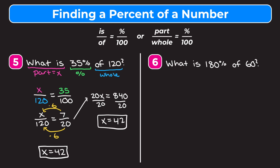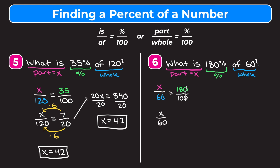The last problem: what is 180% of 60? 'What is' is our part, so X. 180% is our percent, and 'of 60' is our whole. So X over 60 equals 180 over 100. Simplifying by crossing out zeros then dividing top and bottom by 2 gives X over 60 equals 9 over 5. Using the shortcut: to get from 5 to 60 we multiply by 12, so we multiply 9 by 12, giving 108. So X equals 108.